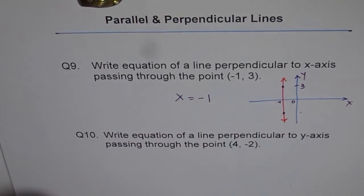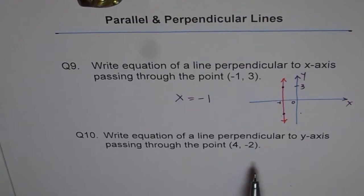So I am doing these questions again and again for you so that you get them once for all. I'd like you to read the question and write down your equation first and then I will give my suggestion. Here is my suggestion: Write equation of a line perpendicular to y-axis this time, passing through the point (4, -2).